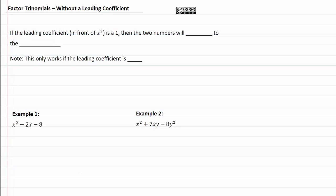Factor trinomials without a leading coefficient. If the leading coefficient, which is the number in front of the x² term, is a 1, then the two numbers, or in other words the two factors of the last term, will add or subtract depending whether we're adding or subtracting to the middle term.